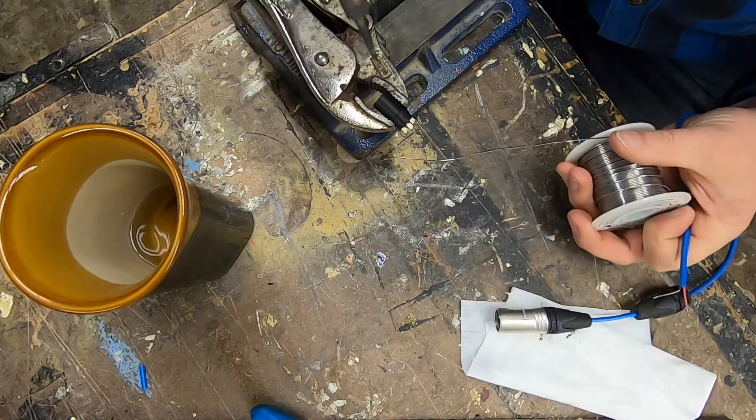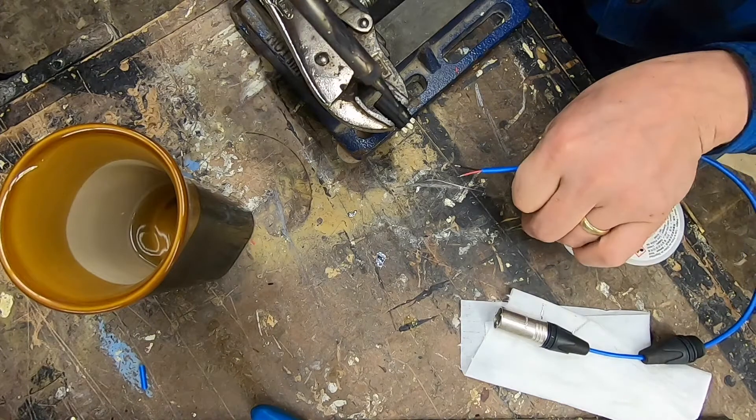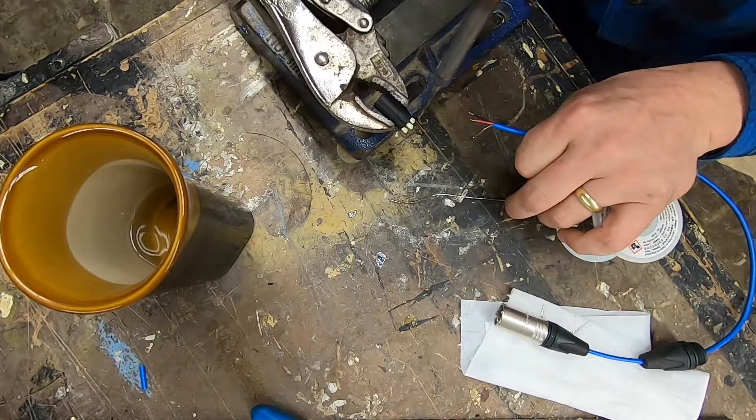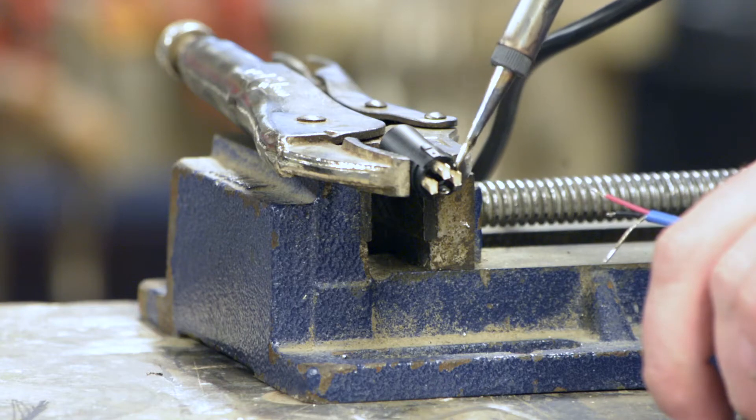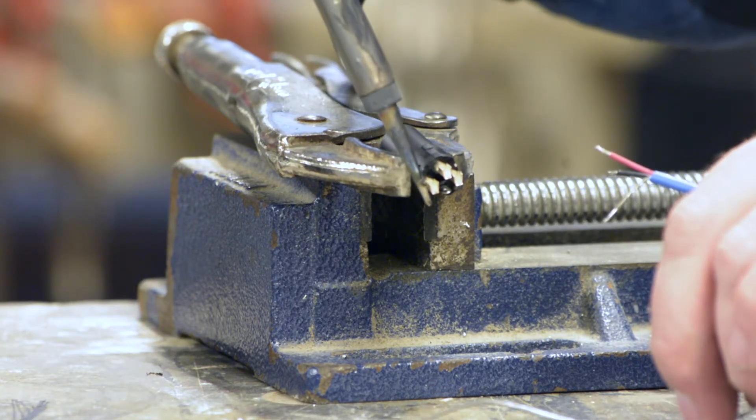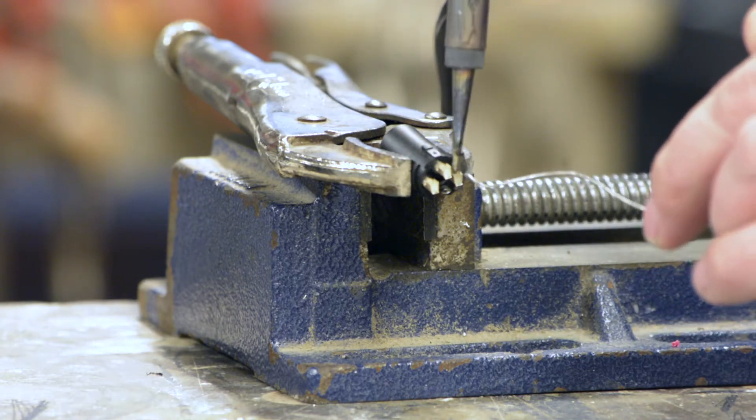Now on the female insert, pins one and two are reversed. So on the male, you saw how I did the red on this side, the positive. This is pin two on the male. Now on the female, pin two is on this side. Pin three is still in the middle.